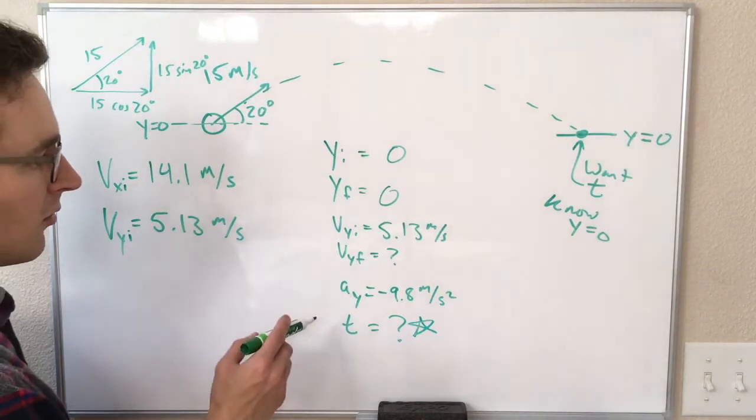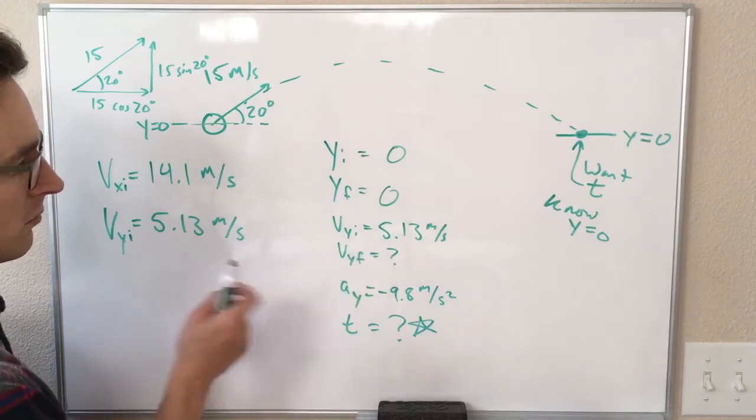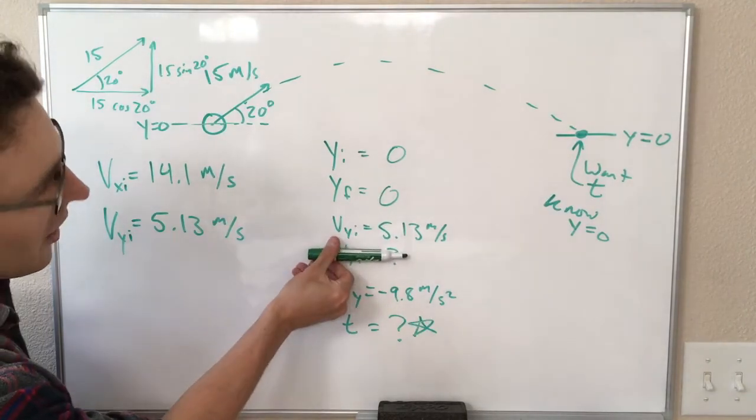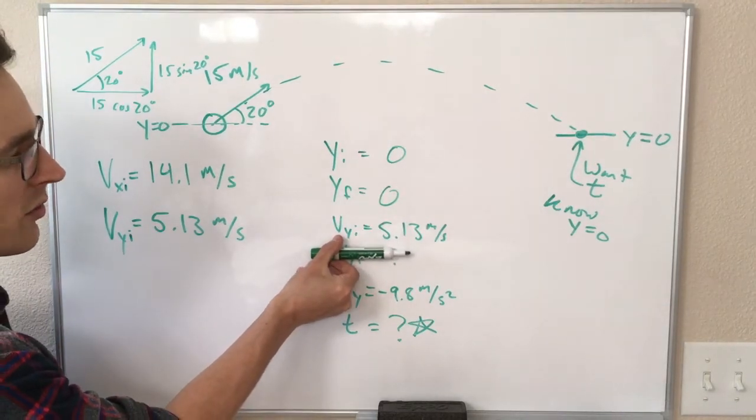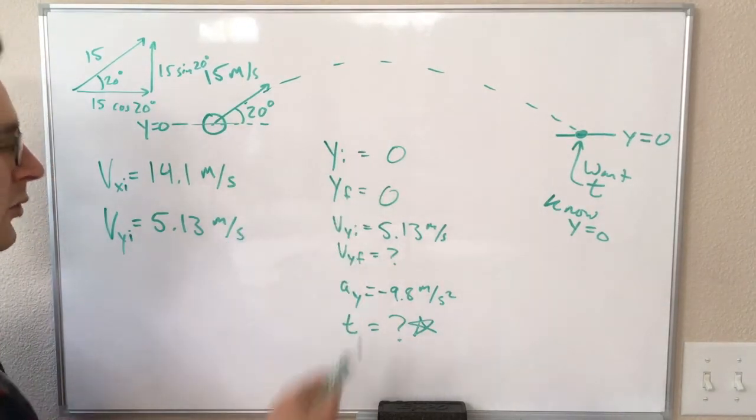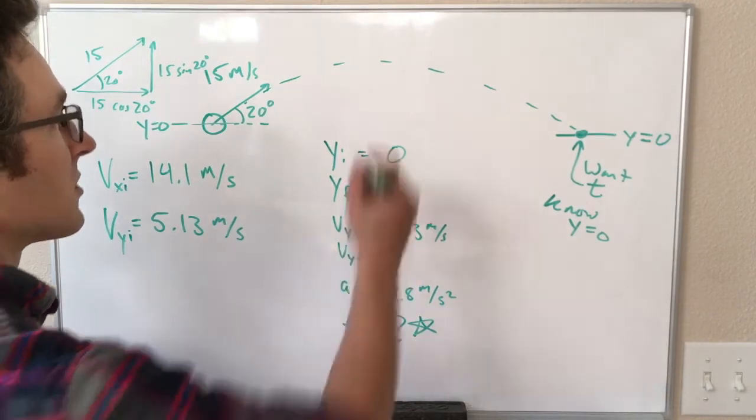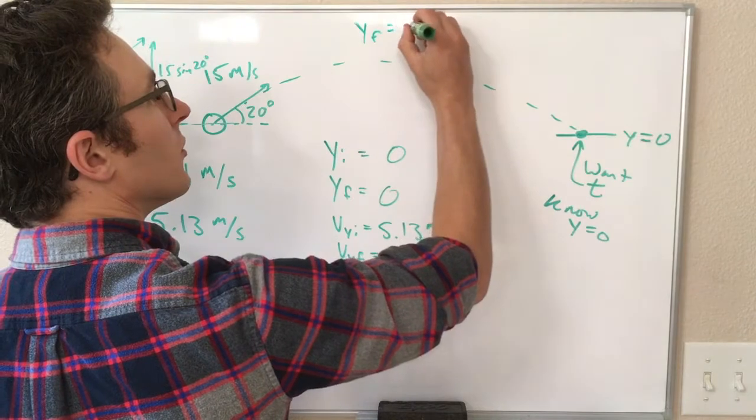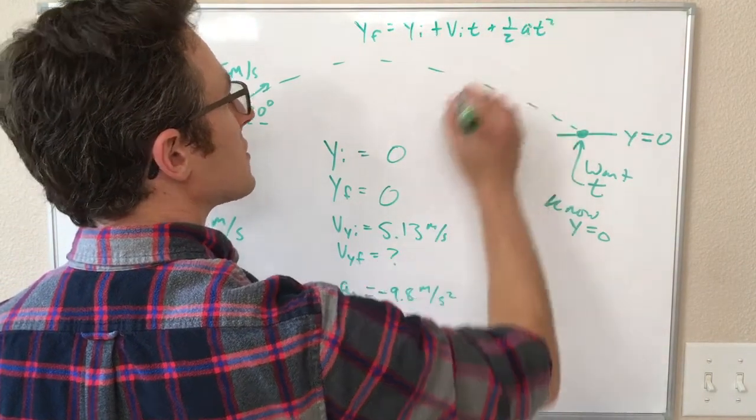So the only thing that we don't care about is Vy final. So the other 5, we either know or would like to find, so we would like an equation with those 5. And if we look through our equations, that is the position equation that has acceleration in it. So that's y final equals y initial plus Vt plus one-half At squared.